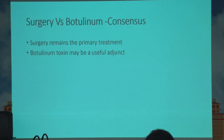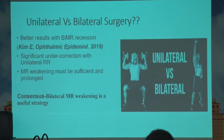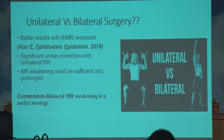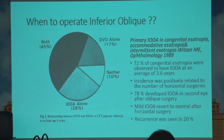The third debatable issue — unilateral versus bilateral surgery — does not have much debate remaining. Most prefer bimedial recessions for smaller deviations. For larger deviations, an additional lateral rectus resection of the other eye can be added if not doing a combined Botox procedure. Bilateral medial rectus recession suffices in most cases and is the accepted strategy.